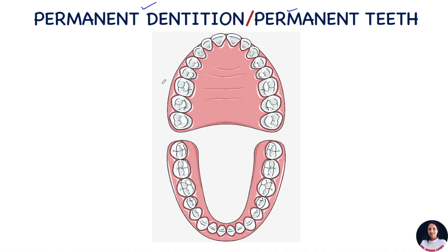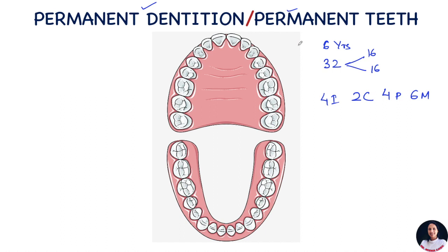Permanent teeth start erupting at the age of 6 years and they never exfoliate, as long as the teeth remain healthy. We have 32 teeth in the permanent dentition. If we look at the number of teeth per arch, there are 4 incisors per arch, 2 canines per arch, 4 premolars, and 6 molars per arch, making 16 teeth per arch — 16 in the maxillary arch and 16 in the mandibular arch.